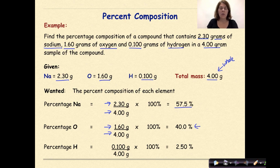And finally hydrogen. We are given 0.1 grams of hydrogen over our total sample of 4 grams. Divide that, multiply by 100 and again we get 2.5 percent.